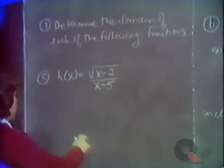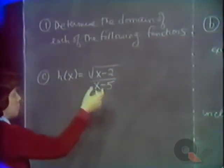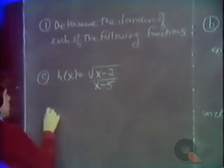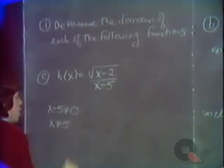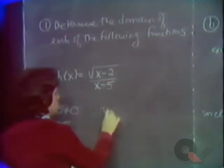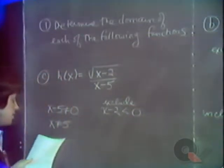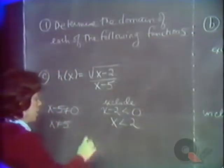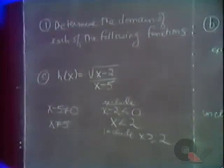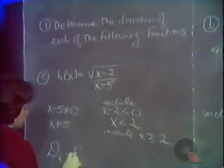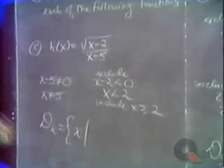We know that we have to exclude those values for which there is division by zero. So x minus 5 is not to be equal to zero — x is not to be equal to 5. We should also exclude those values which would give us the square root of a negative number. x less than 2 is to be excluded, so we're going to include x greater than or equal to 2. The domain of h is all x values you can substitute into this function with no division by zero and no square roots of negative numbers.